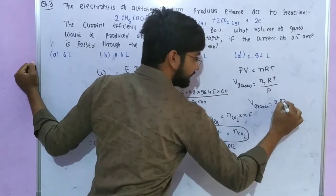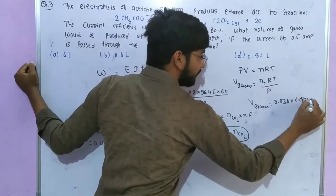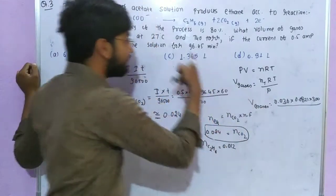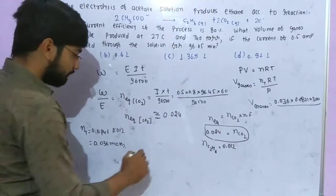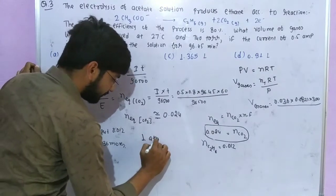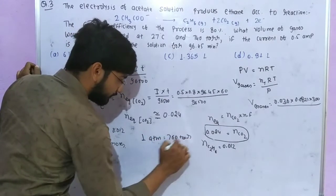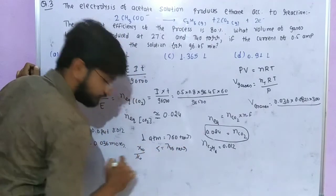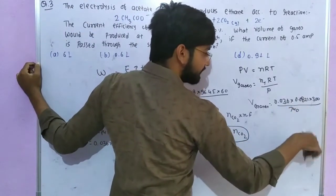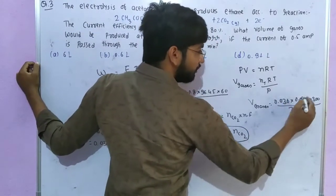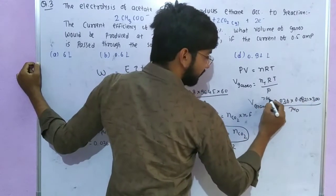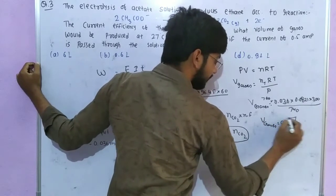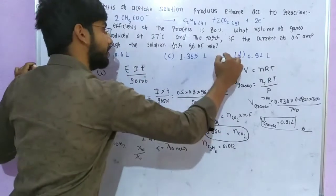Using PV equals nRT: 0.036 times 0.0821 times temperature 300 Kelvin (27 degrees Celsius converted). Pressure is 740 torr which equals 740 divided by 760 ATM. Volume of gases calculated is 0.91 liter. This is your answer and the correct option.